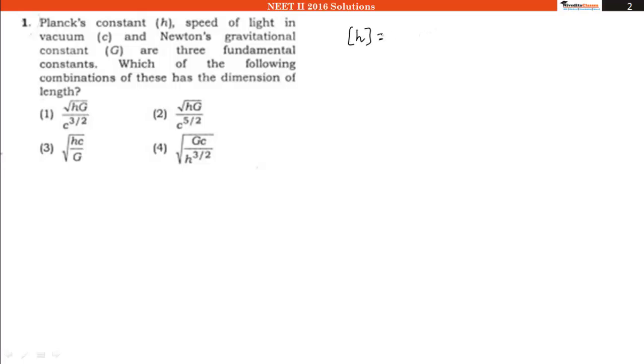We need to know the dimensions of all the variables involved. Planck's constant h has dimensions m1 l2 t-1. Speed of light c has dimensions m0 l1 t-1. Gravitational constant G has dimensions m-1 l3 t-2.